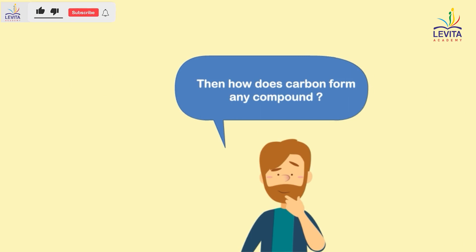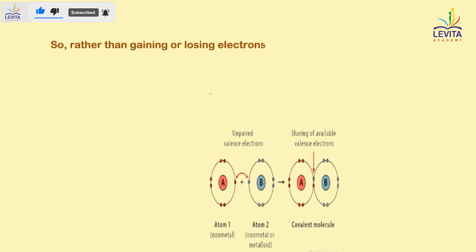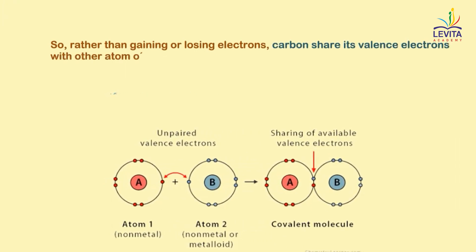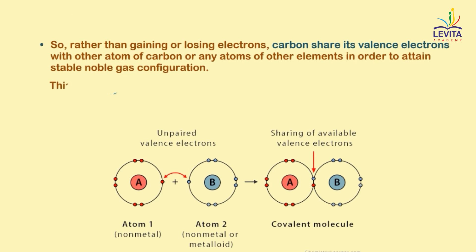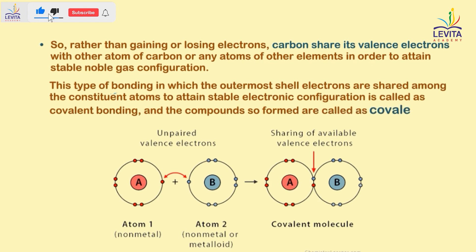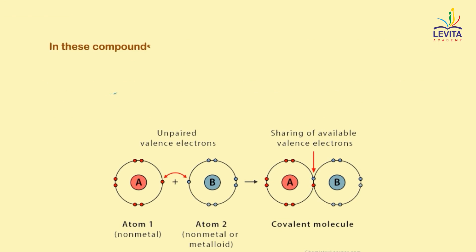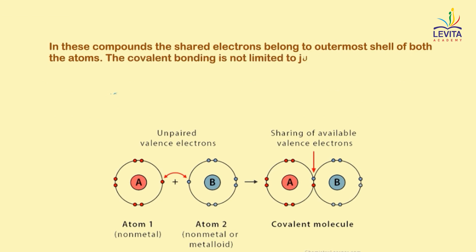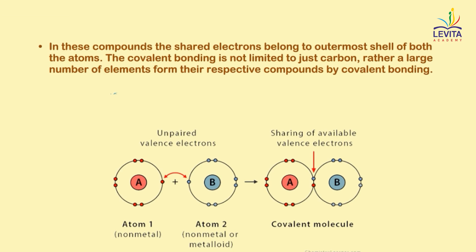Then, how does carbon form any compound? Rather than gaining or losing electrons, carbon shares its valence electrons with other atoms of carbon or atoms of other elements in order to attain stable noble gas configuration. This type of bonding in which the outermost shell electrons are shared among the constituent atoms to attain stable electronic configuration is called covalent bonding, and the compounds so formed are called covalent compounds. In these compounds, the shared electrons belong to the outermost shell of both atoms. Covalent bonding is not limited to just carbon — a large number of elements form their compounds by covalent bonding. Let us look at some examples to have a better understanding of the bonding process.